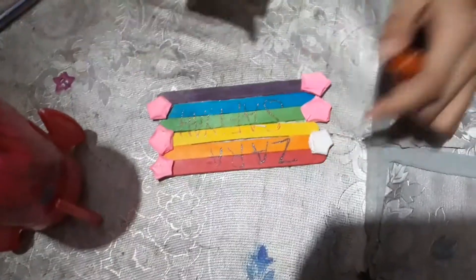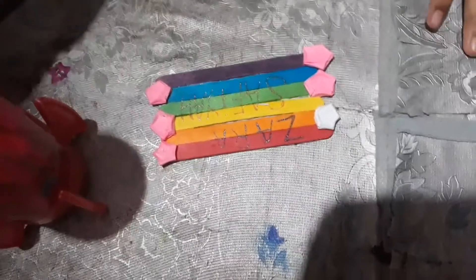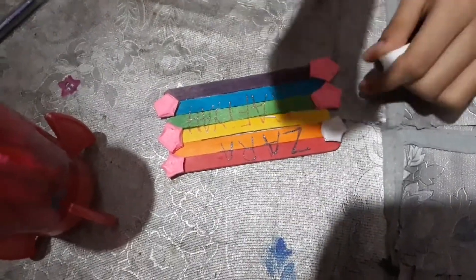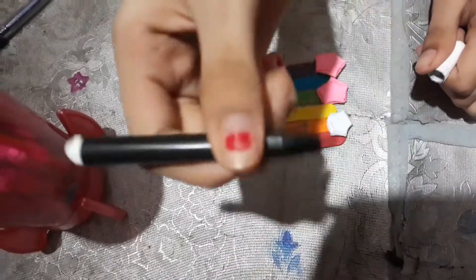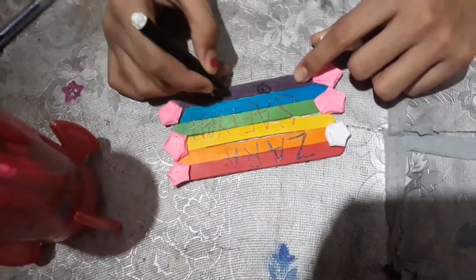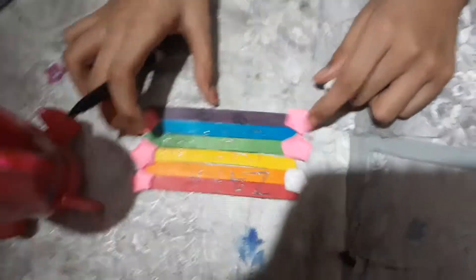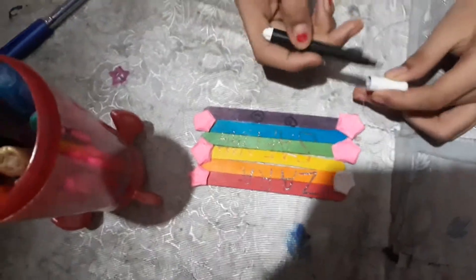So after you write your name, you can even draw anything you want. So I have a black marker. You can draw anything you want with it, like a heart, a smiley, and that's all. You can draw anything you want.